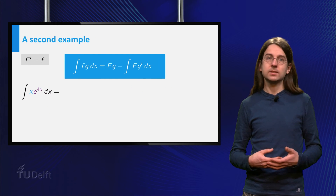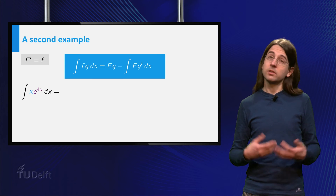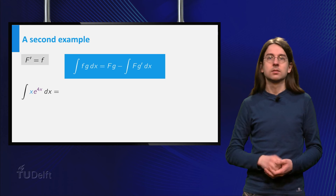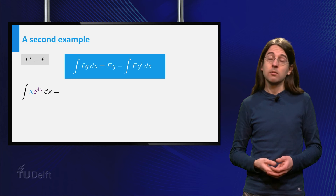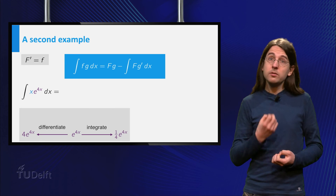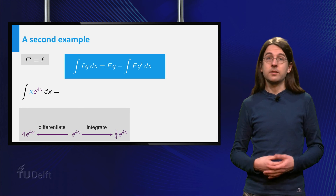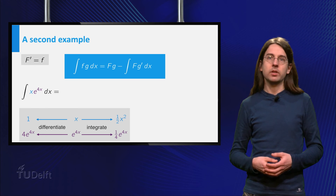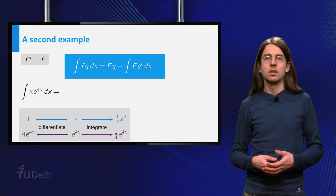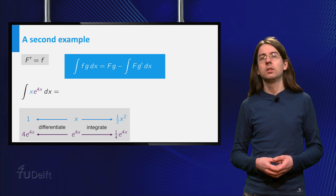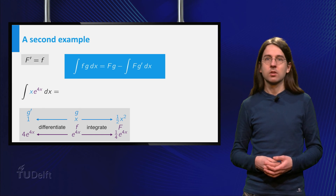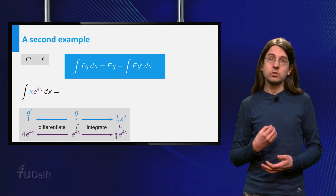Let us now consider the example x times e to the power 4x. We want to calculate the integral of x·e^(4x), and it seems obvious to split the integrand as x times e^(4x). Which of these two functions shall we integrate and which shall we differentiate? For e^(4x) it does not matter if we integrate or differentiate, as the function will just be multiplied by a constant either way. For x, integration gives one-half x squared and differentiation gives the constant 1. As a constant function is much simpler than a quadratic one, we differentiate x. Thus we set f equal to e^(4x), so its primitive capital F becomes one-quarter e^(4x), and the function x is g, so g prime becomes the constant function 1.